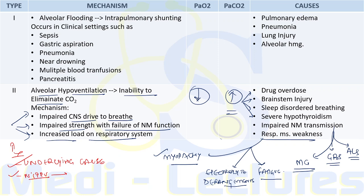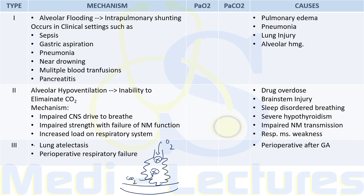Type 3 respiratory failure occurs due to lung atelectasis. Since it commonly occurs in the perioperative period, it is also known as perioperative respiratory failure. Due to collapse or atelectasis of the lung, oxygen cannot diffuse from alveoli to blood vessels and CO2 cannot diffuse from blood vessels to alveoli, causing PaO2 to decrease and PaCO2 to increase.